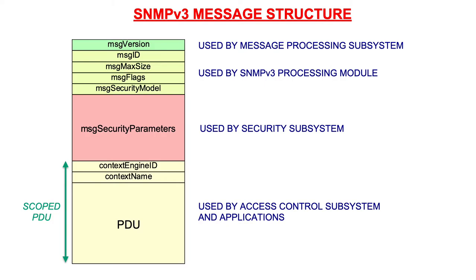The message contains security parameters used by the security subsystem for encryption and authentication. Note that authentication is performed over all fields of the SNMP message, to ensure that no field can be modified by any man-in-the-middle. The last part — the context engine ID, context name, and PDUs — are used by the access control subsystem and the various SNMP applications. This last part is also called the scoped PDU, and only this part of the message will be encrypted. It is not possible to encrypt earlier fields since these are needed by the receiving SNMP entity to perform decryption.